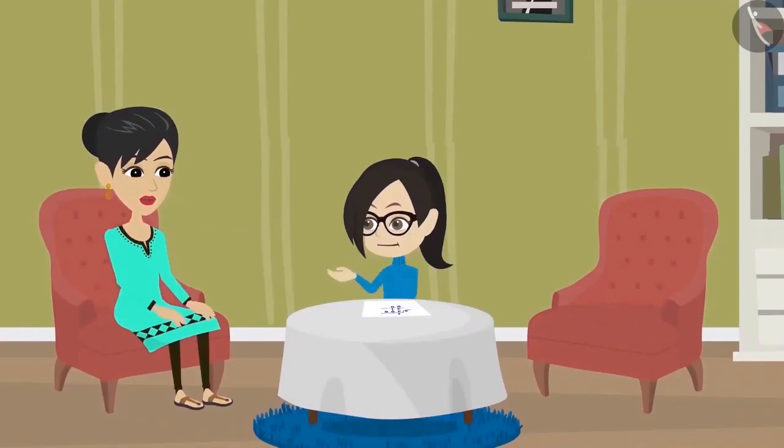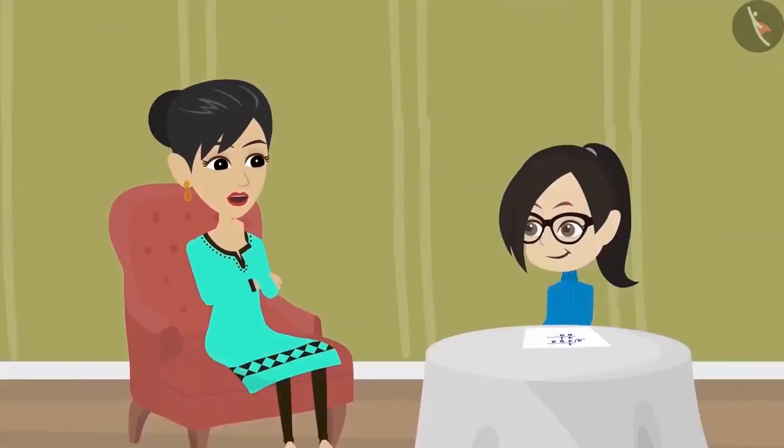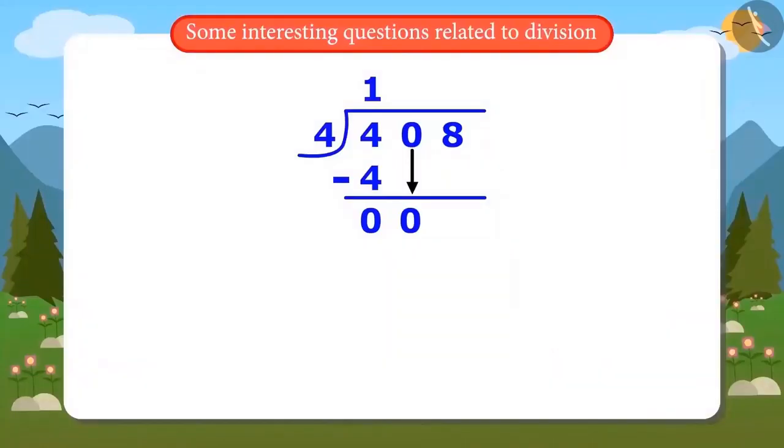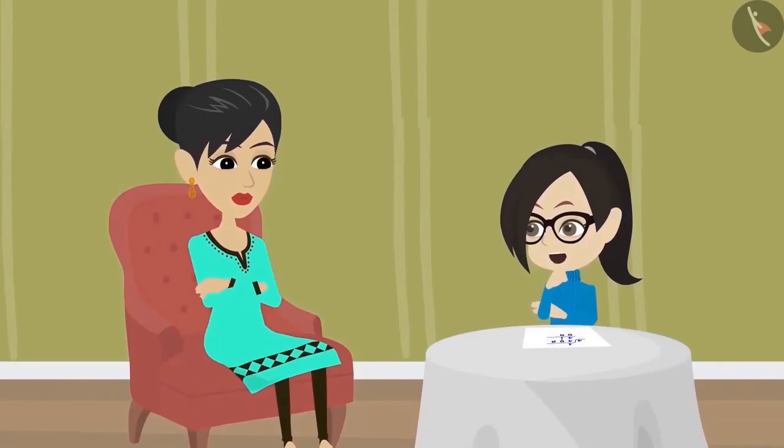Wait Vandana. What happened mummy? Now, I understood what you were doing wrong in dividing. Look, when you wrote 0 down, you have to think by which number should we multiply 4 to get the answer as 0.